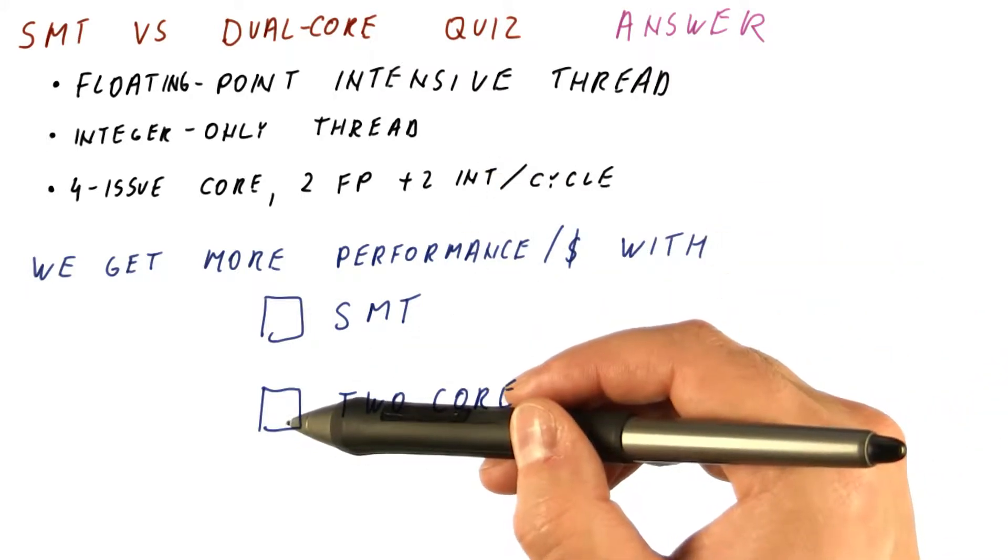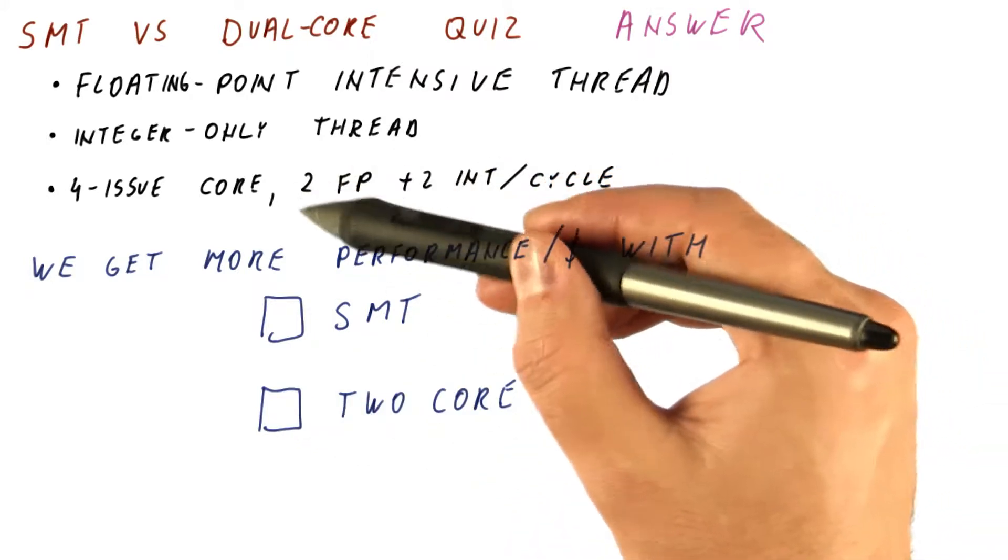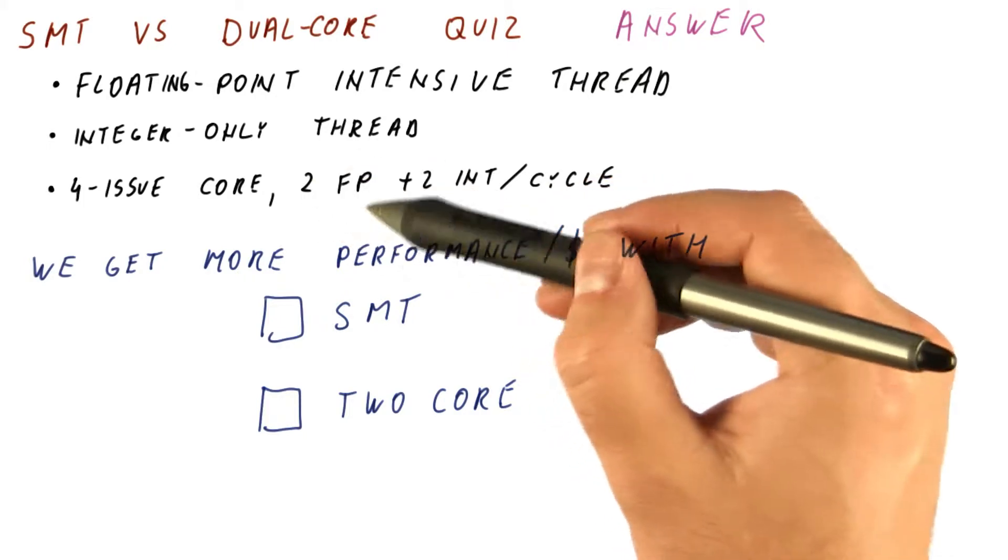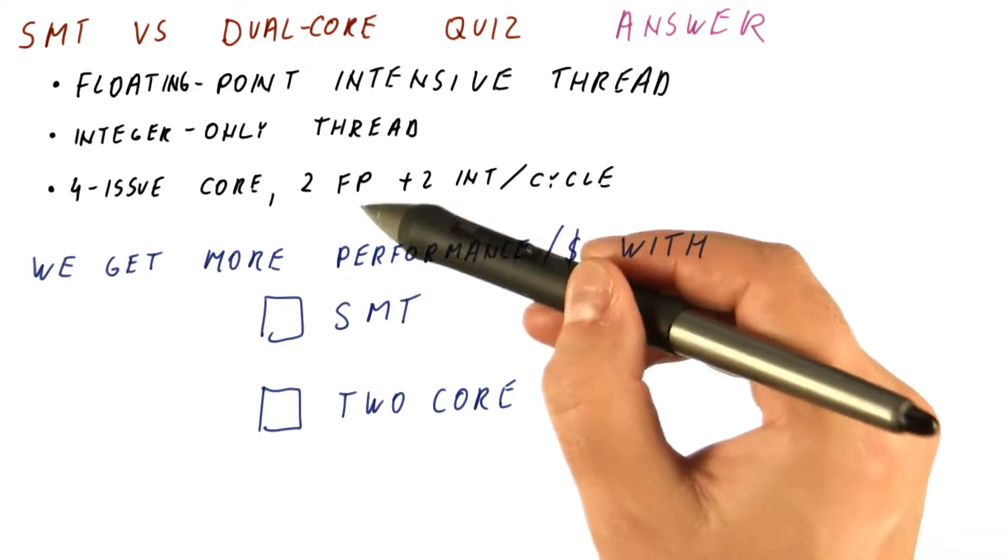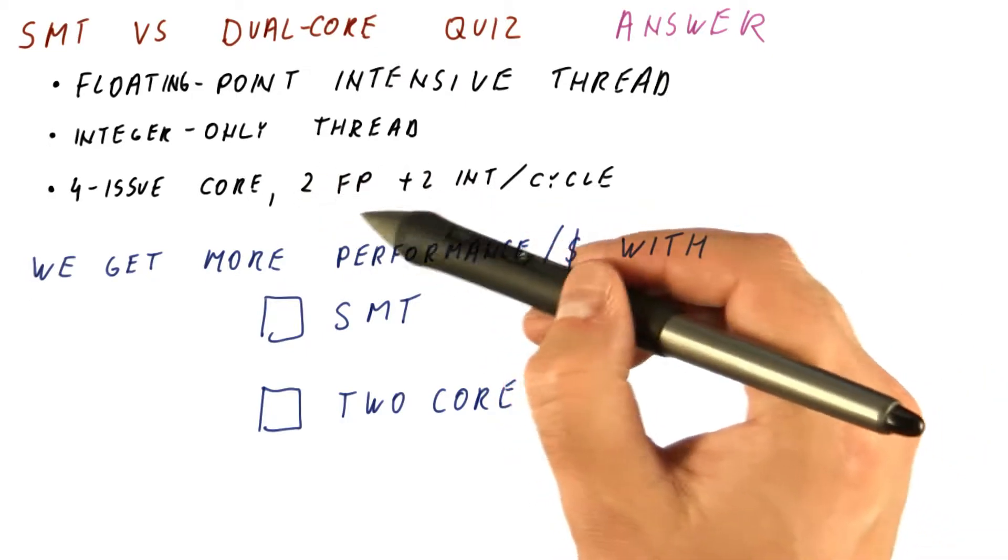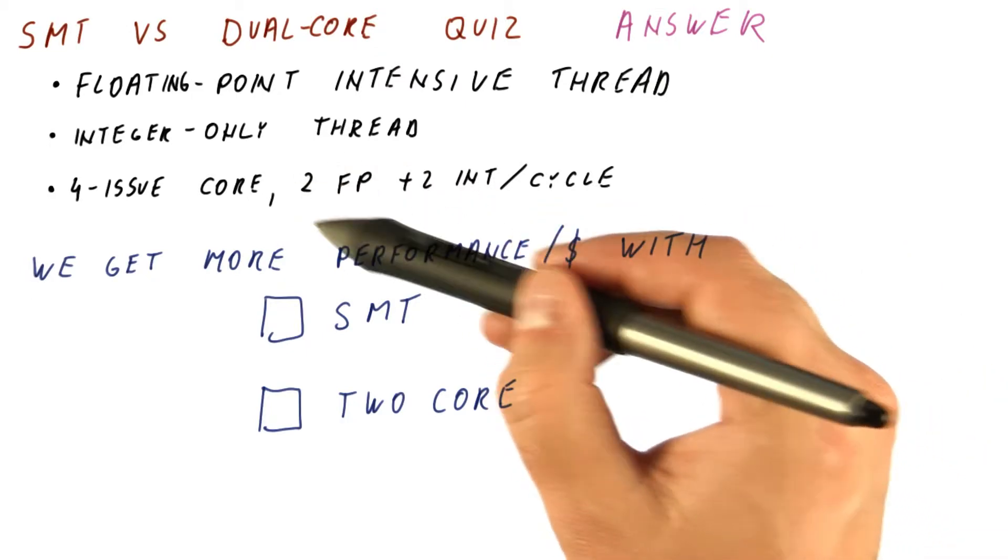With a dual core processor, one of the cores gets to be two issue plus maybe a little bit. The other gets to be just two issue because it never sees floating point instructions that would need more than two issue.